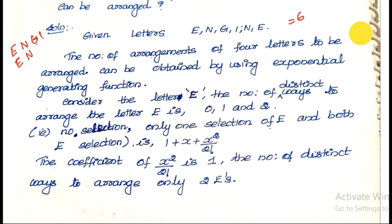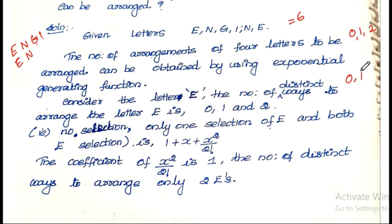This is zero, one, and two — meaning zero selection, one selection, or both E selections. These are the possibilities for E. We express this in exponential generating function as: 1 plus x plus x-squared divided by 2.